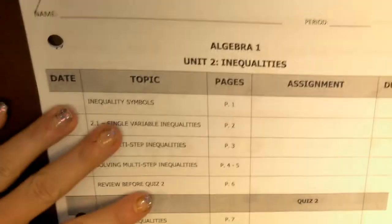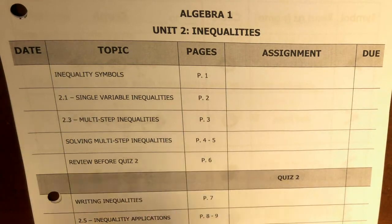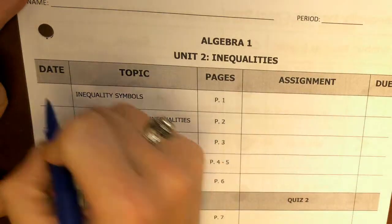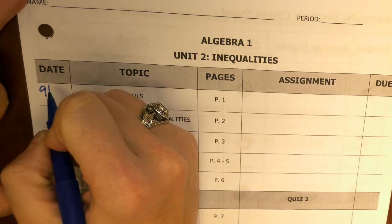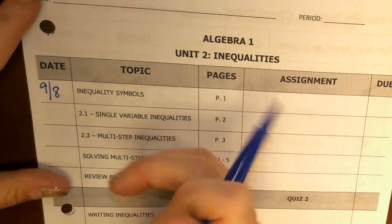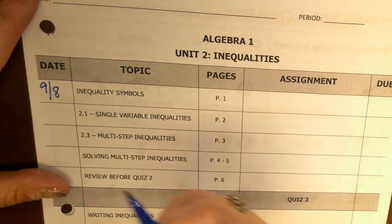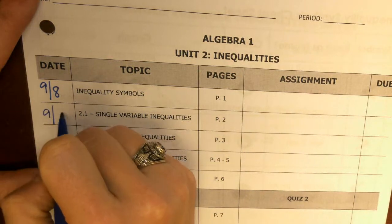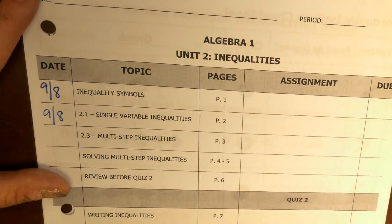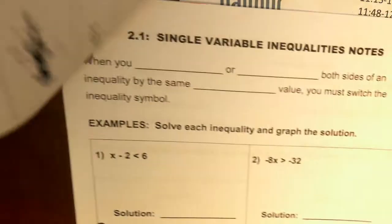Okay guys, so we're starting Unit 2 today. Tonight, please put your name on the packet and your period. Tonight is the eighth, so we are going to uncover inequality symbols and less than — 2.1 Single Variable Inequality. That's just two pages; they're separate on the table of contents.